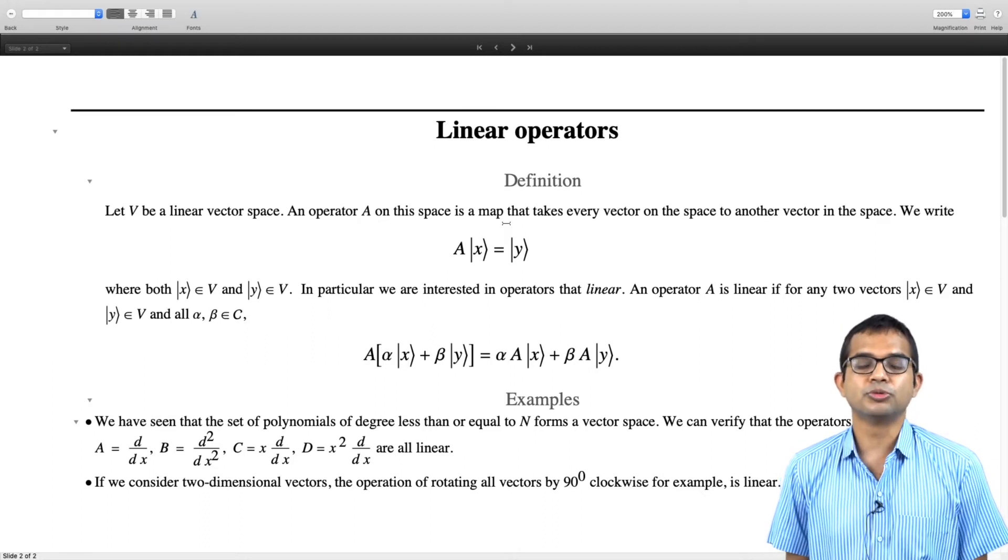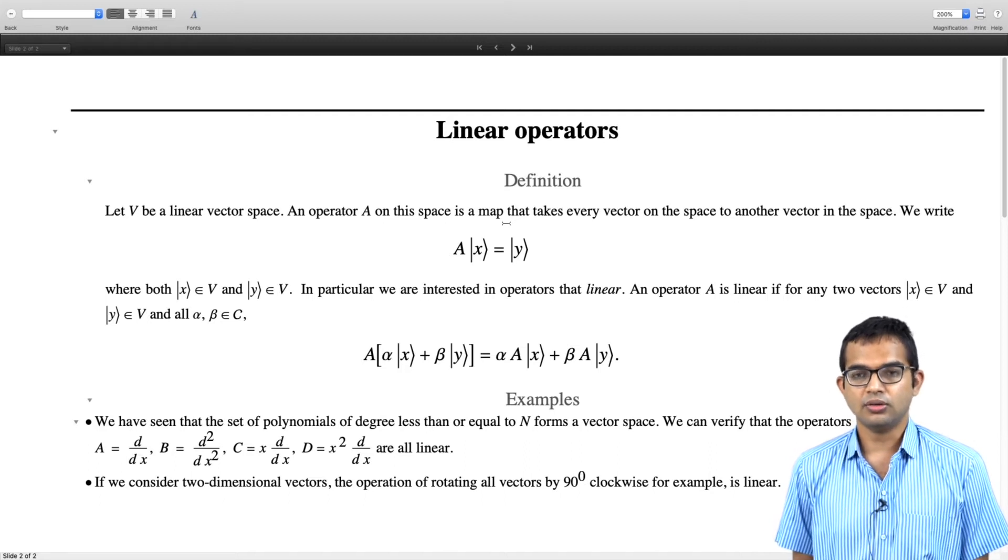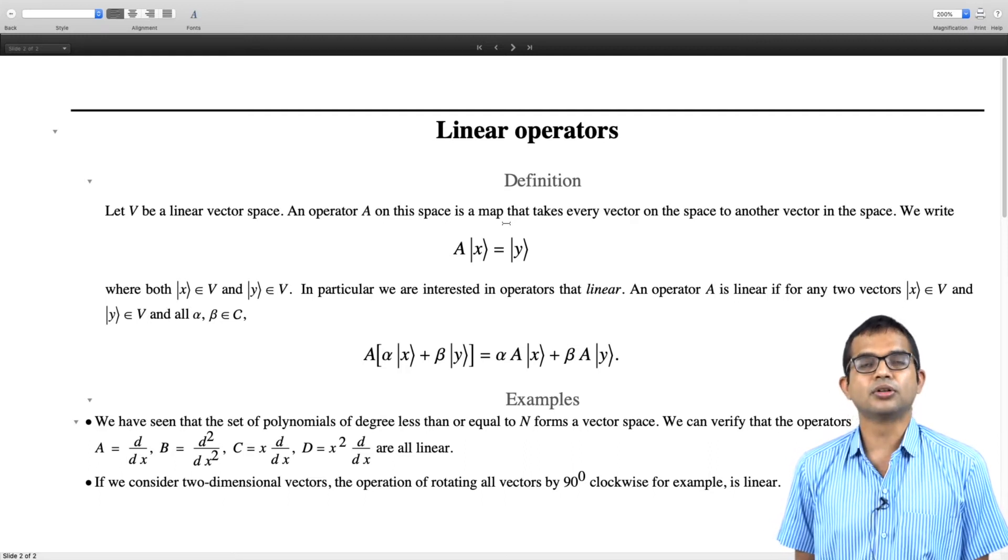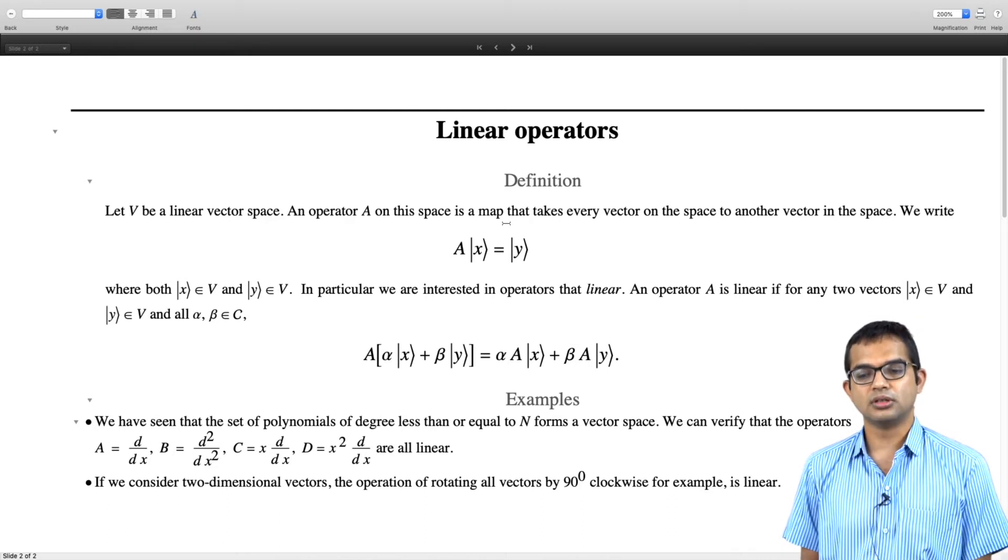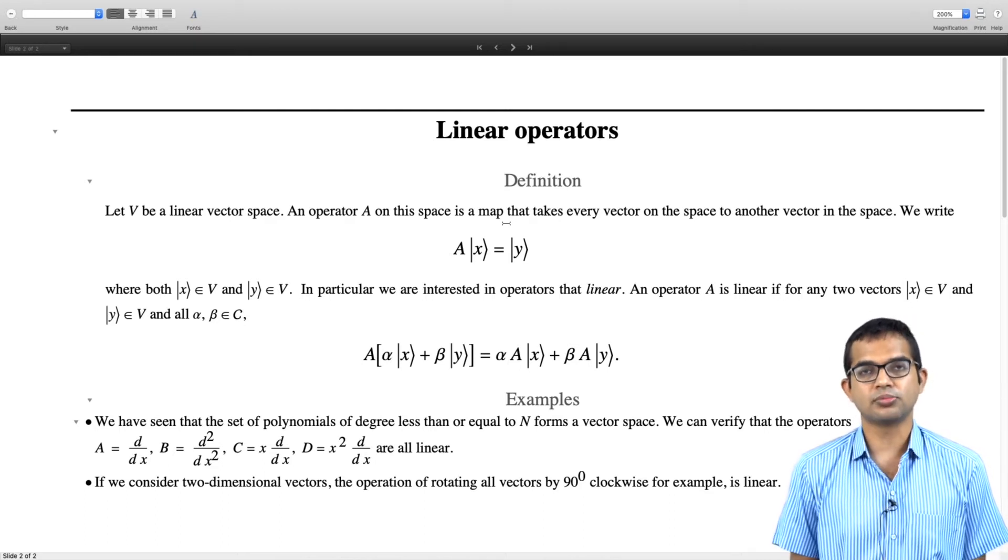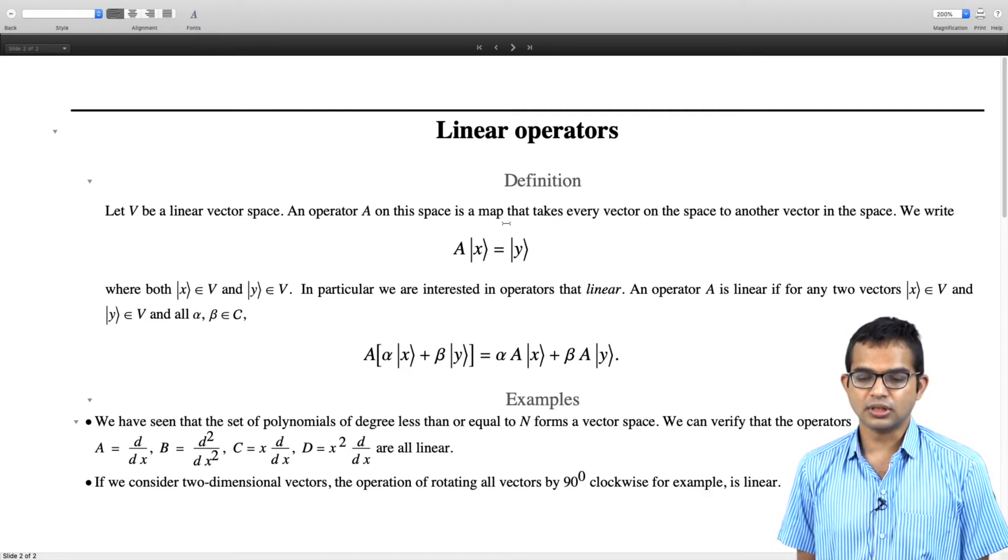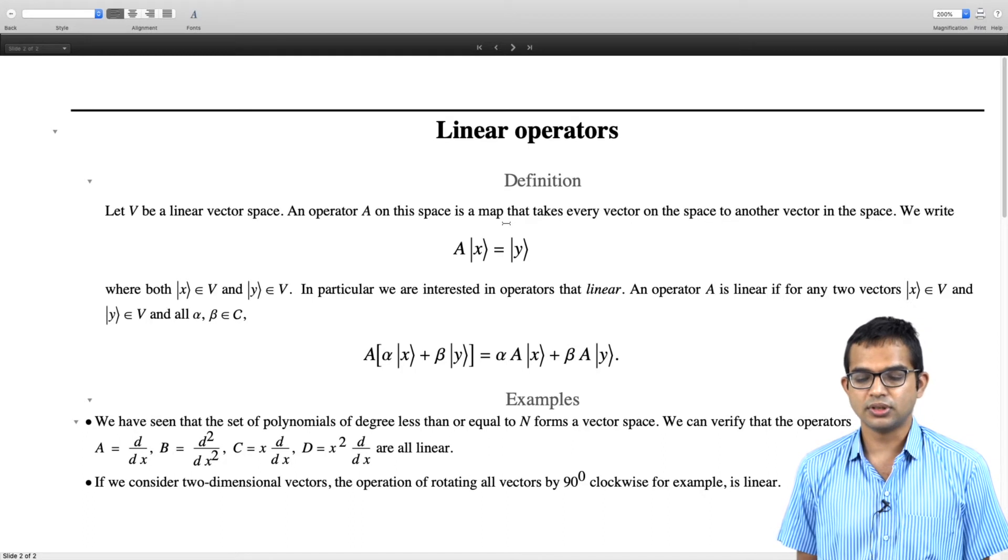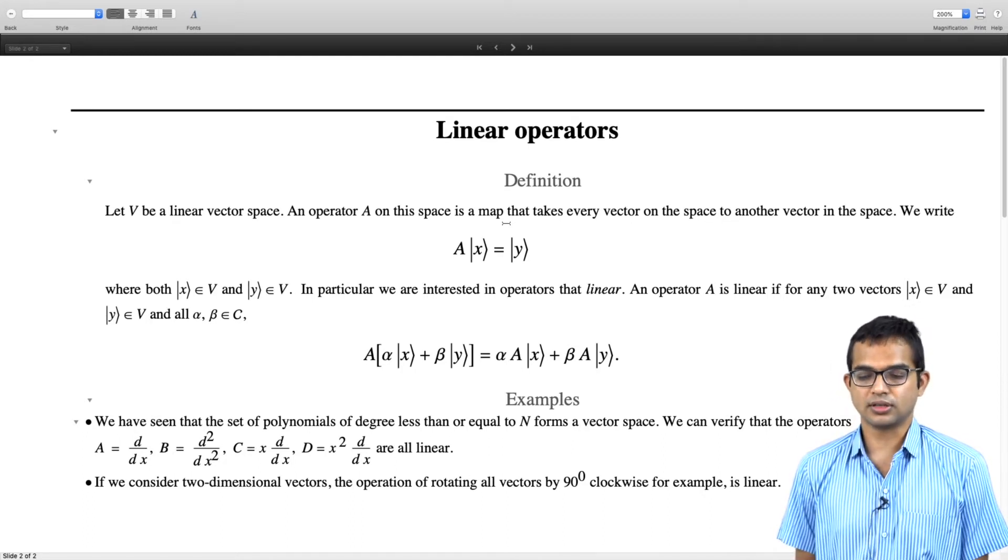We have all seen the superposition principle in some form, which is that if you take some linear combination of vectors and operate with this map, this operator, if it acts upon a linear combination of such vectors, it must give you the same kind of linear combination with the operator acting individually on the different vectors.